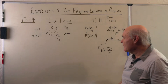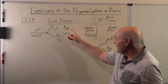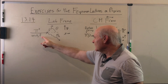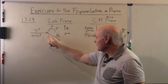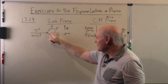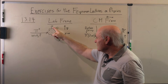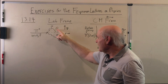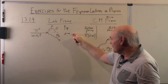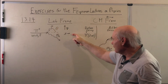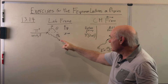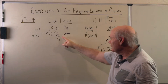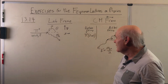So we have, in the lab frame, a pi-zero meson moving at velocity v. It's going to decay into two photons, one of which is going to go off at angle theta from the incident direction, which we'll call the x direction. The other one will go off at an angle theta 2 in the x direction.